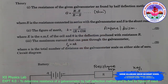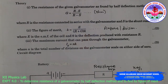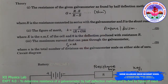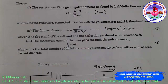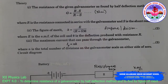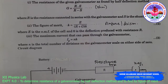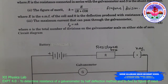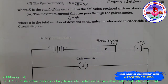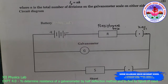Where E is the EMF of the cell and theta is the deflection produced with resistance R. The maximum current that can pass through the galvanometer, Ig, is directly proportional to K, so Ig equals nK, where n is the total number of divisions on the galvanometer scale on either side of zero.